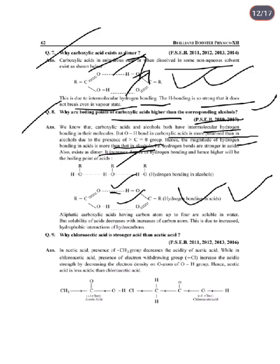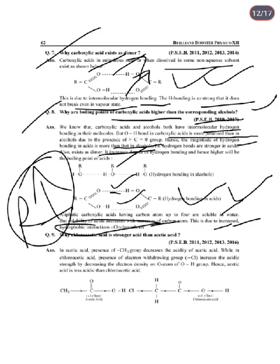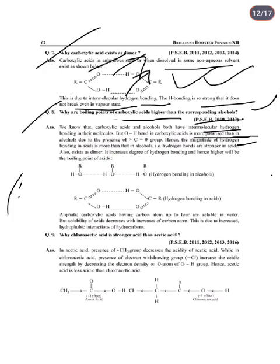Next: Aliphatic carboxylic acids having up to four carbon atoms are soluble in water, but solubility decreases with increasing carbon atom number. This is due to increased hydrophobic interaction — as the R group grows larger, hydrogen bonding decreases and so does solubility.